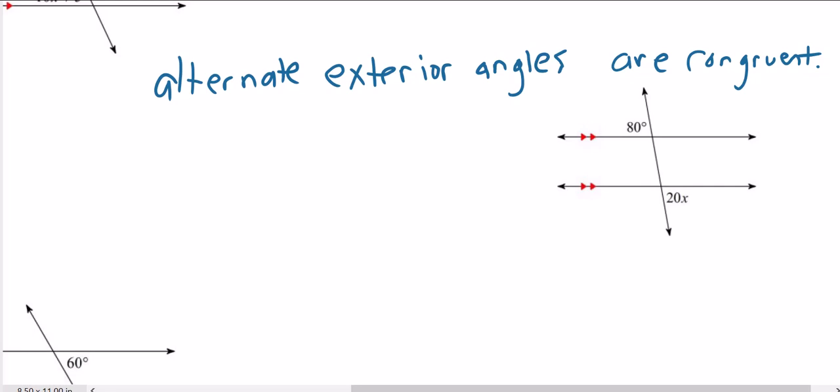And these are alternate exterior angles. And we know from the last lecture video, if you look at your little table, alternate exterior angles are congruent, which means they're equal to each other. So I can set them, once again, equal to each other.